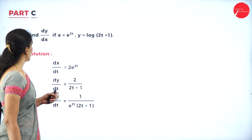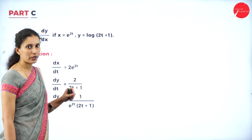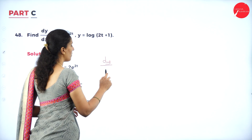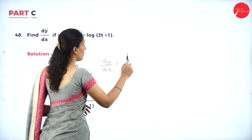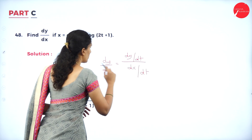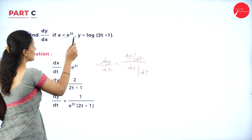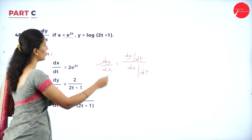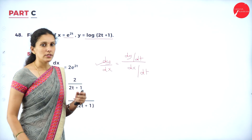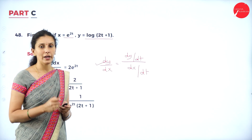Find dy/dx if x = e^(2t) and y = log(2t + 1). For parametric functions, dy/dx = (dy/dt) / (dx/dt). dx/dt = 2e^(2t). dy/dt = 1/(2t+1) · 2 = 2/(2t+1). So dy/dx = [2/(2t+1)] / [2e^(2t)] = 1 / [e^(2t)(2t+1)].